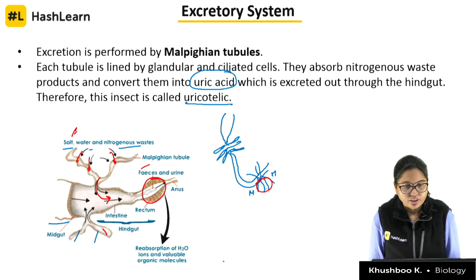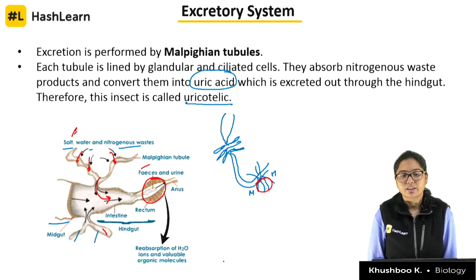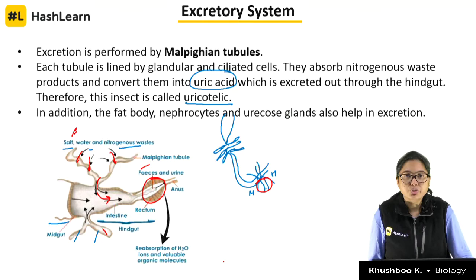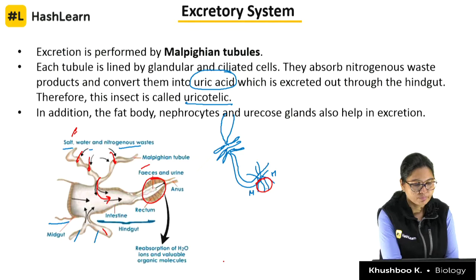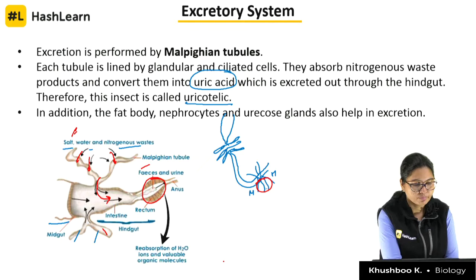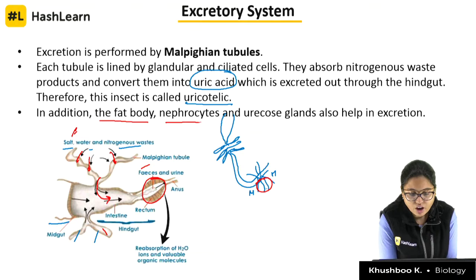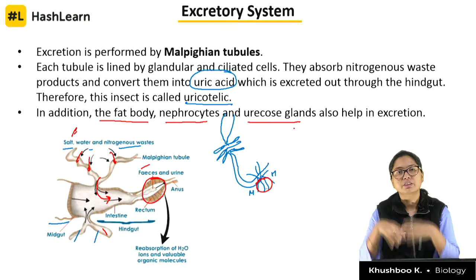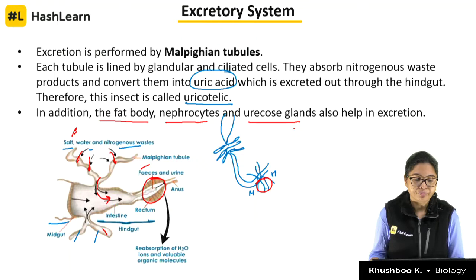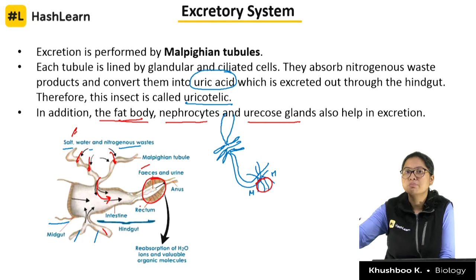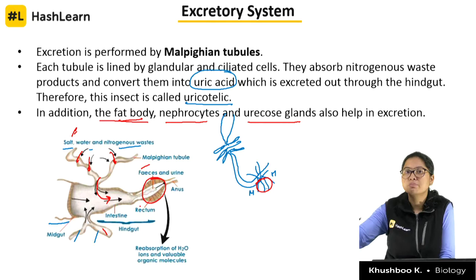We are ureotelic — confirmed. In addition to Malpighian tubules, cockroaches also have fat bodies, nephrocytes, and uricose glands. The waste is simply deposited in these fat bodies, which is called storage excretion. In this type, waste is not removed from the body but stored inside. In contrast, Malpighian tubules remove waste out of the body.